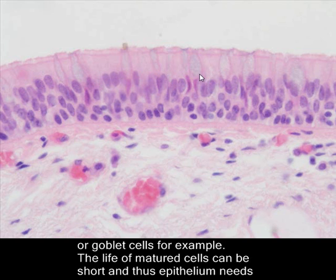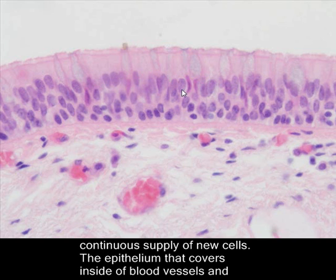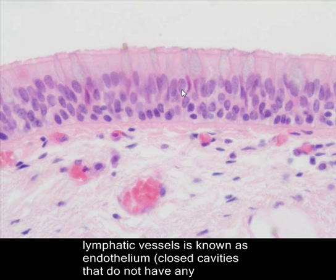The life of matured cells can be very short, and thus the epithelium needs a continuous supply of new cells. The epithelium that covers the inside of blood vessels and lymphatic vessels is known as endothelium.